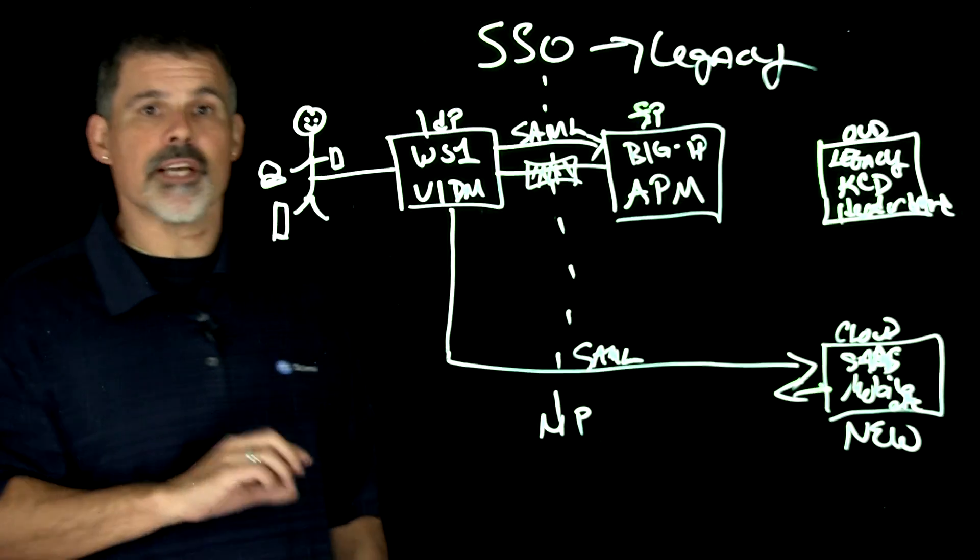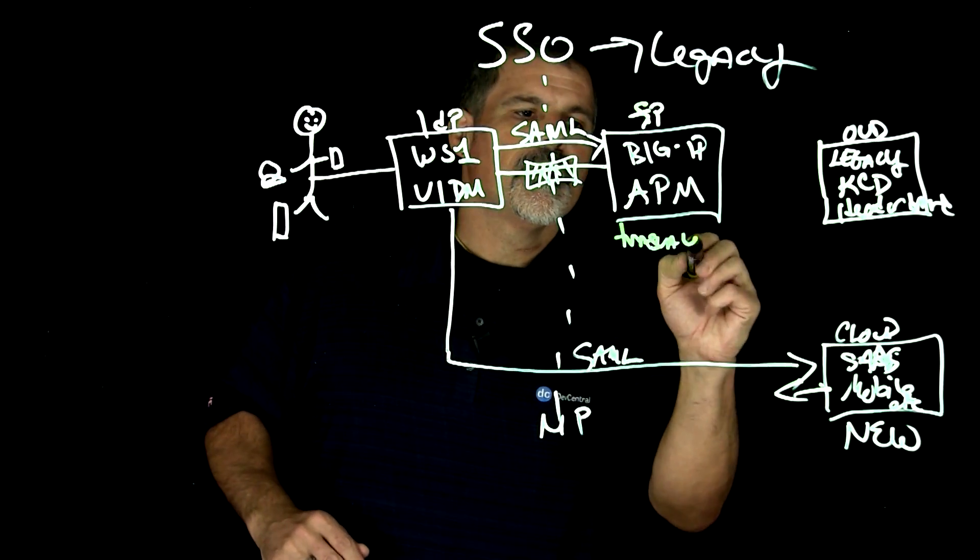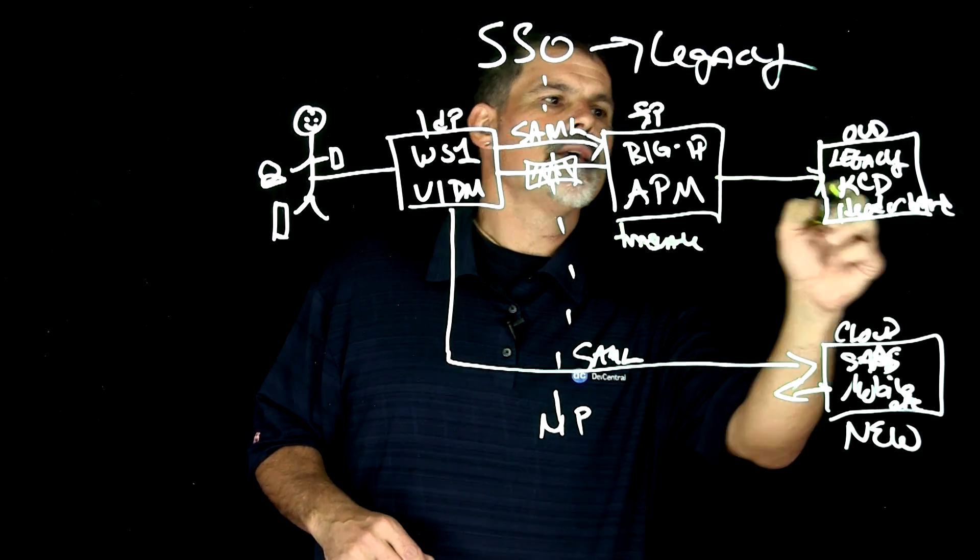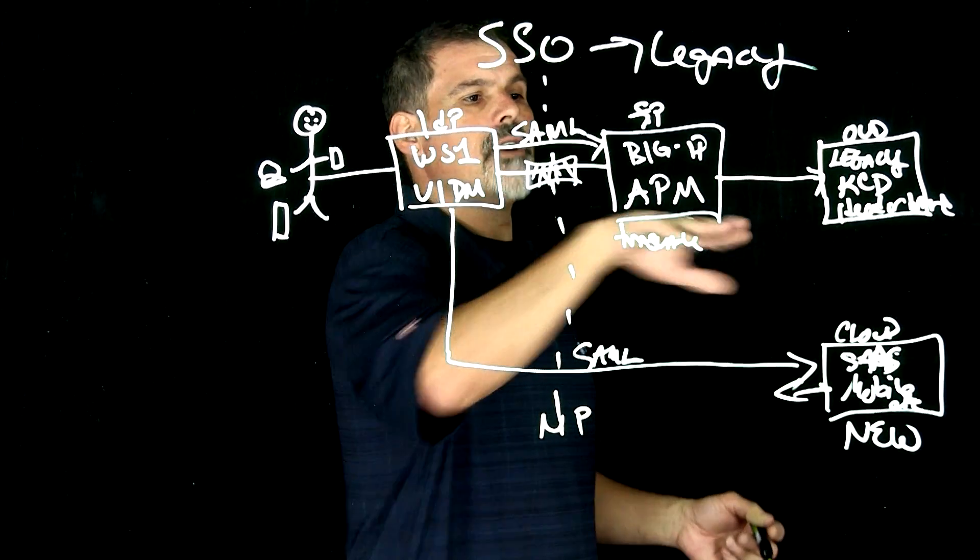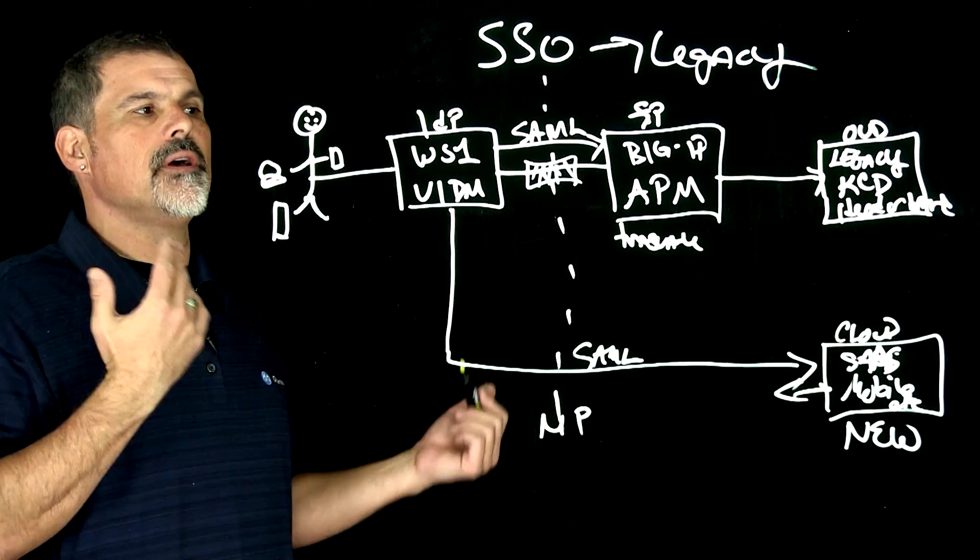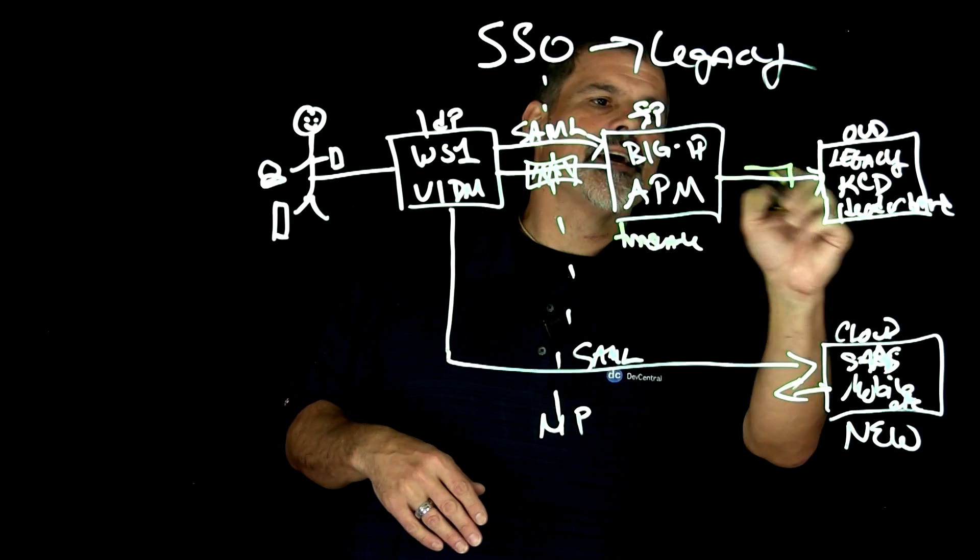Big IP access policy manager will translate that SAML token, that SAML assertion into either a Kerberos-constrained delegation auth or a header-based auth, depending upon the legacy applications requirements. Send that there.